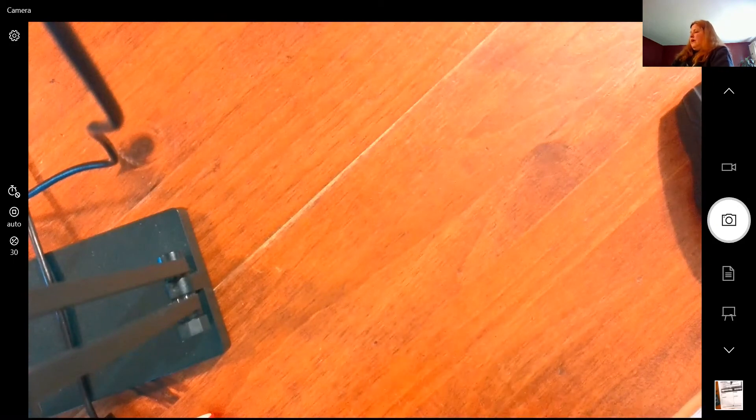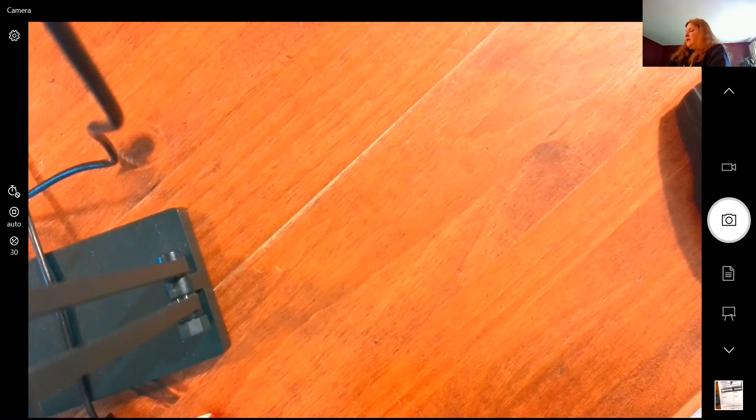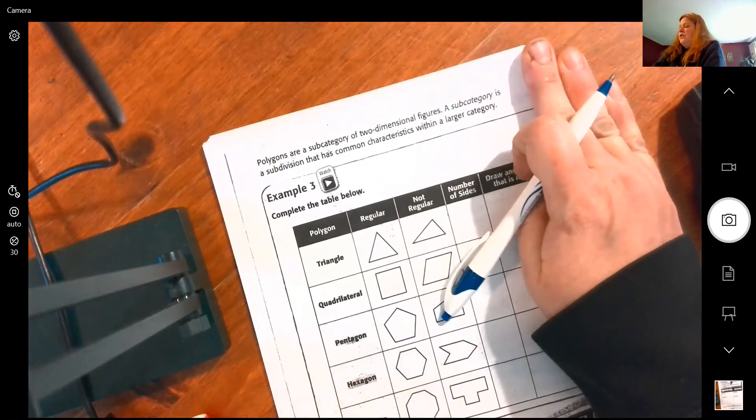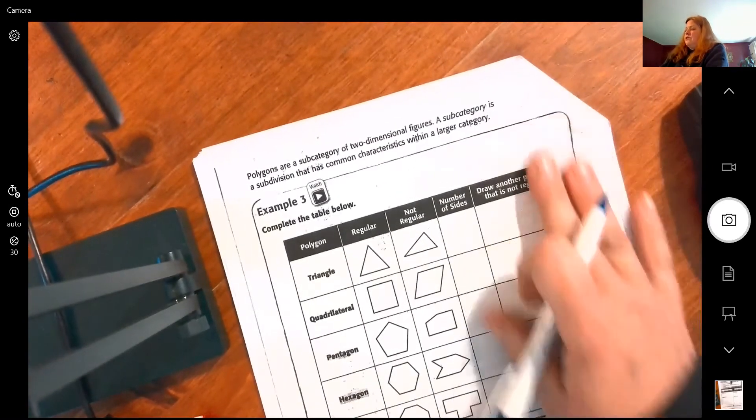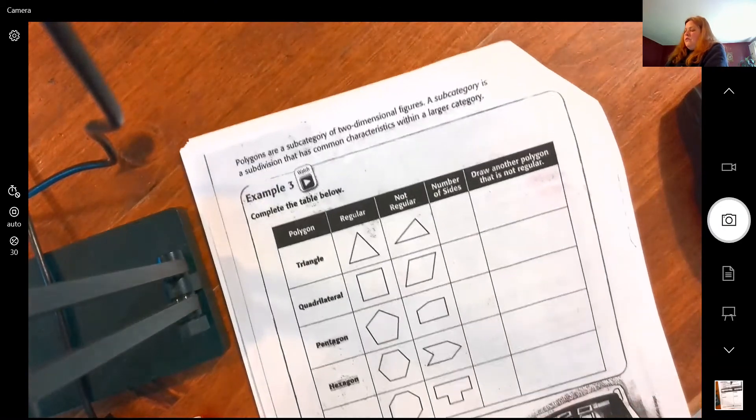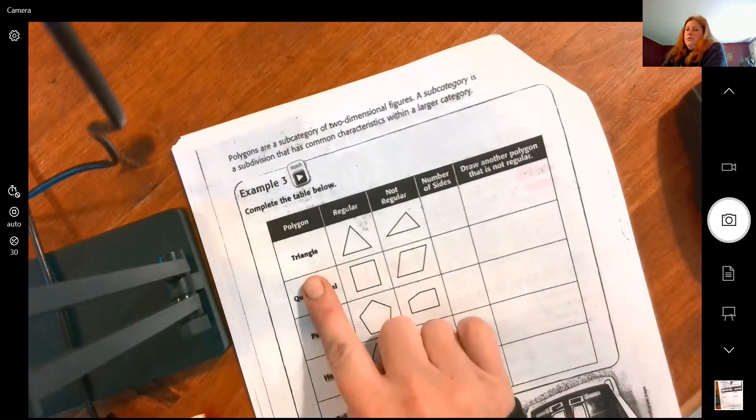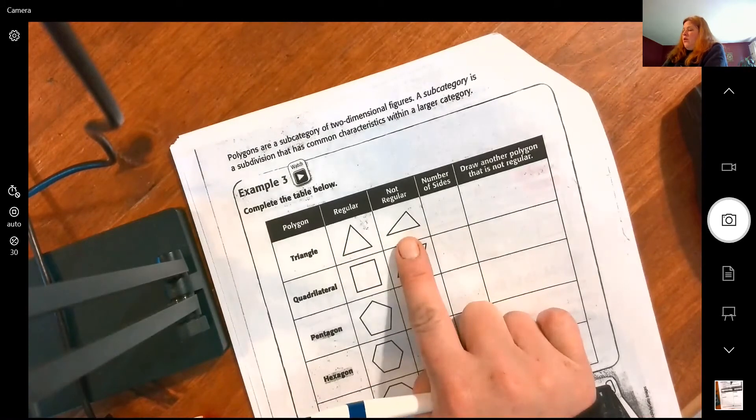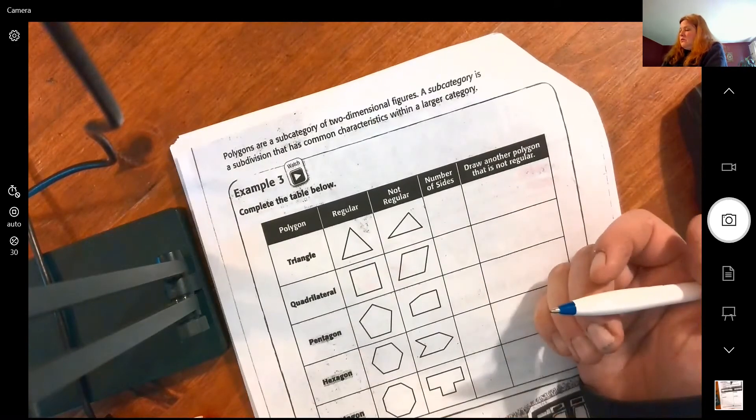All right, polygon is a subcategory of two-dimensional figures. The subcategories, a subdivision that has common characteristics with other categories. So we have triangles that can be either regular or not regular, but they all have how many sides? Three.